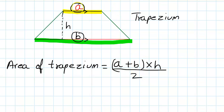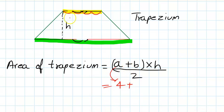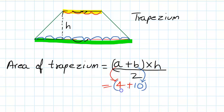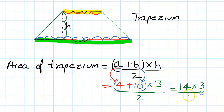Let's solve the question. A is 1, 2, 3, 4 — so A = 4 centimeters. B is 1, 2, 3, 4, 5, 6, 7, 8, 9, 10 — so B = 10 centimeters. Height is 1, 2, 3 — so H = 3 centimeters. Plugging in: (4 + 10) × 3 ÷ 2. 4 plus 10 is 14; 14 times 3 is 42; 42 divided by 2 is 21 centimeter square.